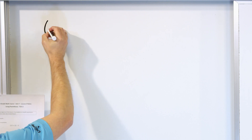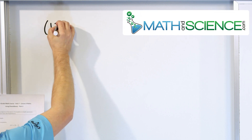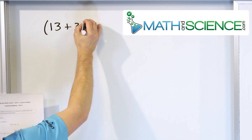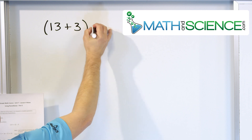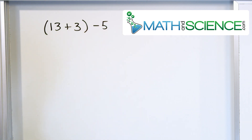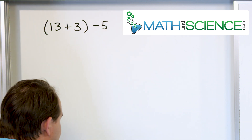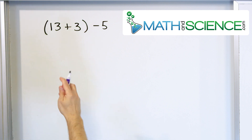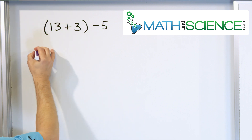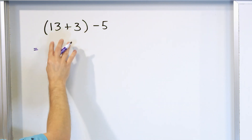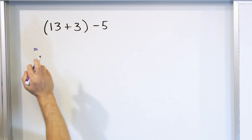Let's take a look at the problem: 13 plus 3, close parentheses, minus 5. What do we do? By now you should know. Always do what's inside the parentheses first. And inside the parentheses is 13 plus 3. That's what we do first.